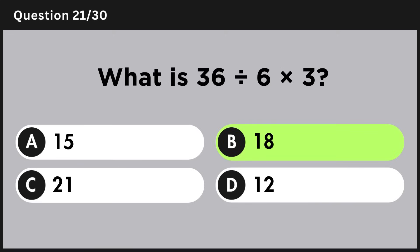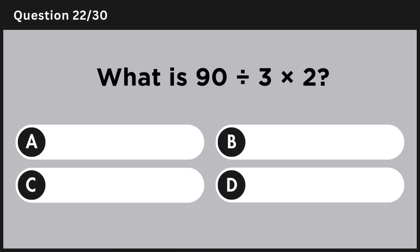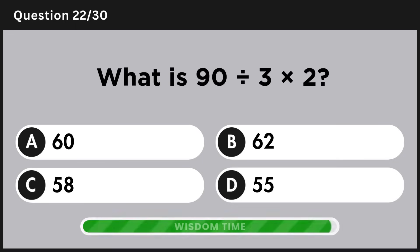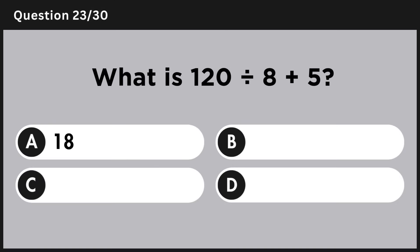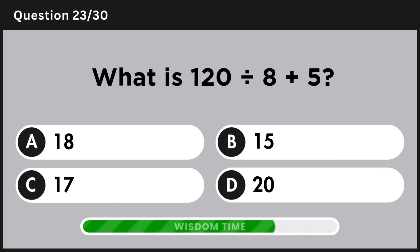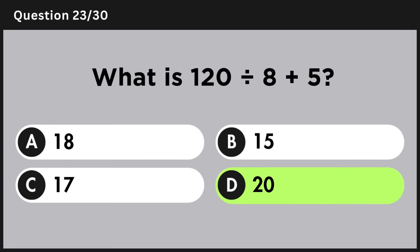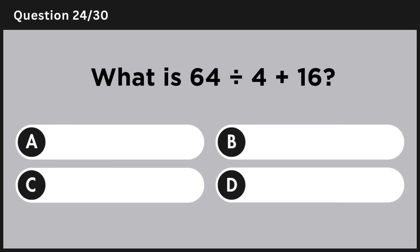Answer B: 18. What is 90 divided by 3 multiplied by 2? Answer A: 60. What is 120 divided by 8 plus 5? Answer D: 20.